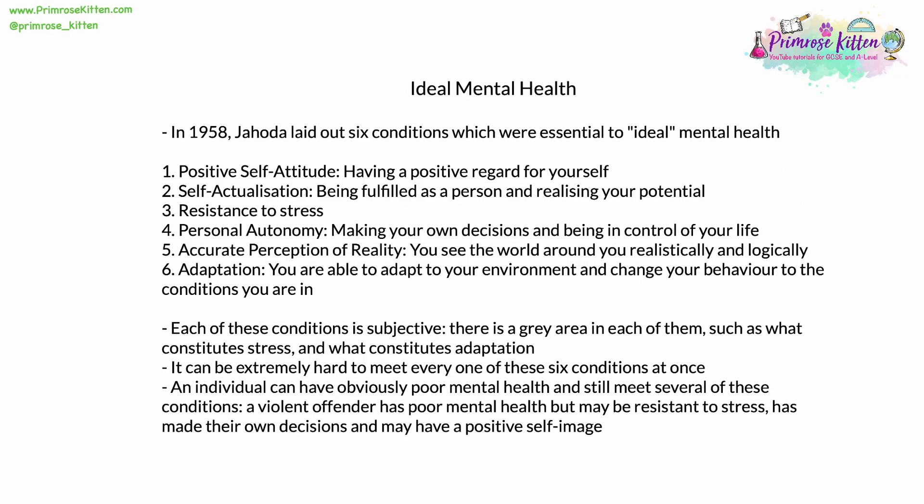In 1958, a researcher called Jahoda laid out six conditions essential to ideal mental health: (1) positive self-attitude — having a positive image and regard for yourself; (2) self-actualisation — being fulfilled as a person and realising your potential; (3) resistance to stress in everyday life; (4) personal autonomy — making your own decisions and being in control of your own life; (5) an accurate perception of reality, seeing the world realistically and logically; and (6) adaptation — being able to adapt your behaviour to changing environments.